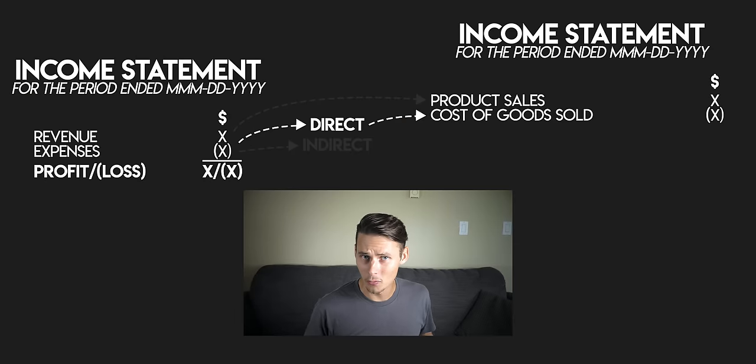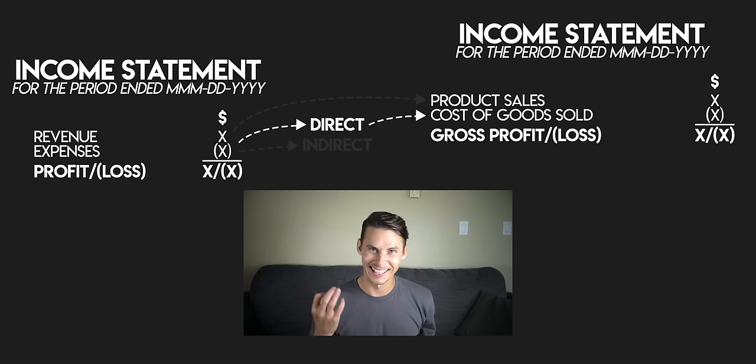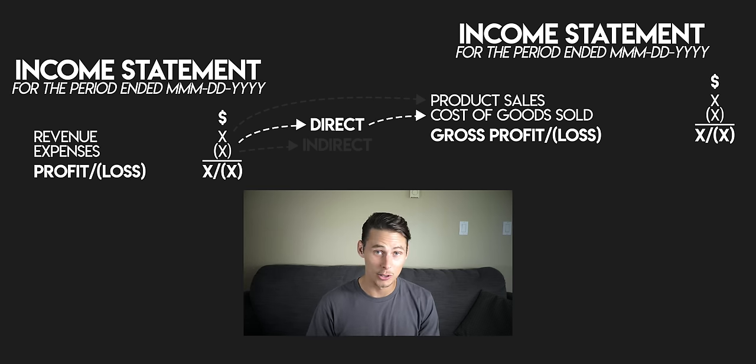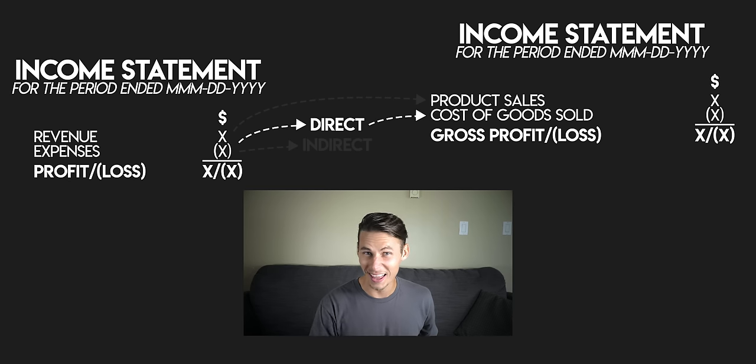Cost of goods sold can be a tricky concept to understand at first — it ties in very closely with inventory on the balance sheet. If you'd like to see me make a video explaining how all of that works, let me know in the comments. And if you haven't already, remember to hit subscribe so you don't miss out on upcoming accounting tutorials. When we take our revenue and deduct our direct costs of doing business, we get to our gross profit. Gross profit is a really useful tool that allows us to measure the efficiency of our production and sales process.